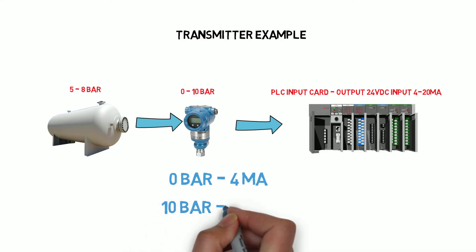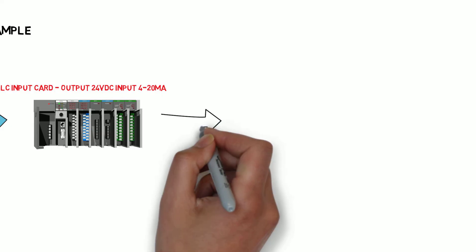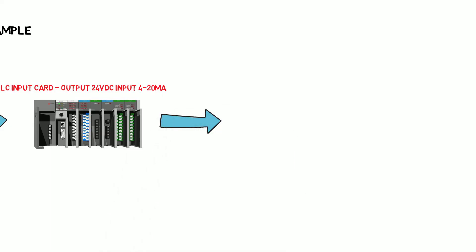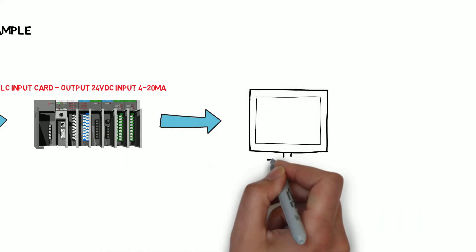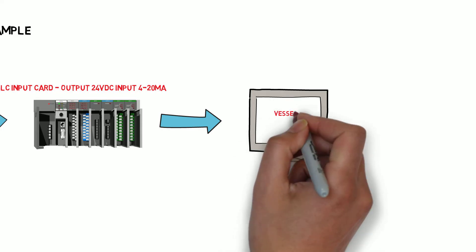At 10 bar in the vessel the transmitter outputs 20 milliamps. The PLC can then be interrogated by a SCADA system or HMI to display the information to the operator.